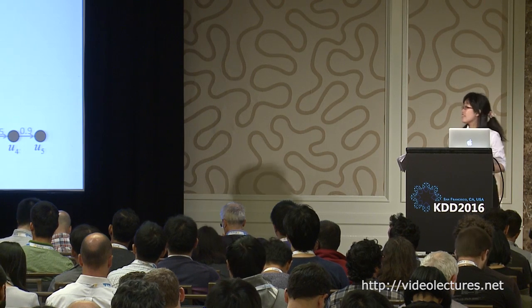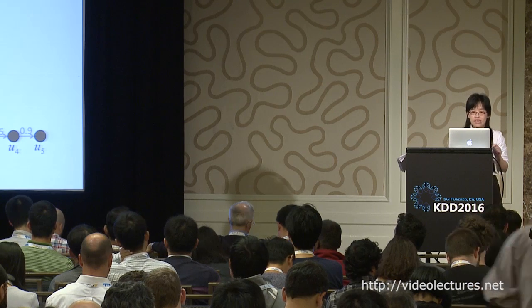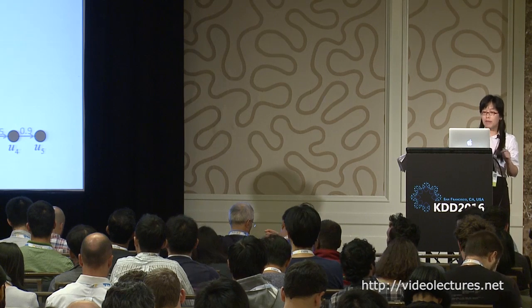Now discussing the difficulty of the SIG problem. First, SIG is NP-hard, similar to how traditional influence maximization is NP-hard, but now involving hyper-edges. Second, SIG is non-submodular. We provide a counter-example to show that since the spread function is not submodular, we cannot obtain a (1 - 1/e) approximation ratio for the SIG problem.